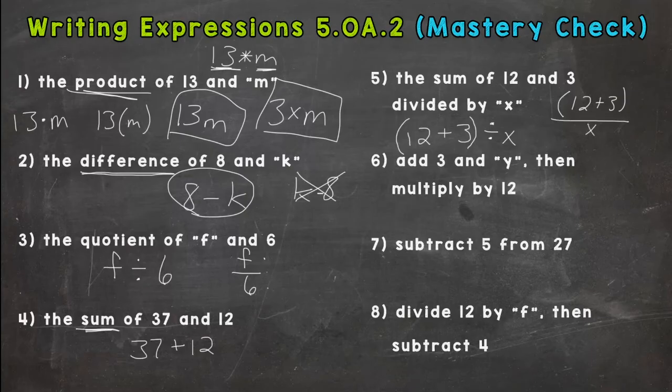Number 6, add 3 and Y, then multiply by 12. So in parentheses, 3 and Y, we are adding them together, and then multiplying by 12. So I'm going to use a dot here to represent multiplication.